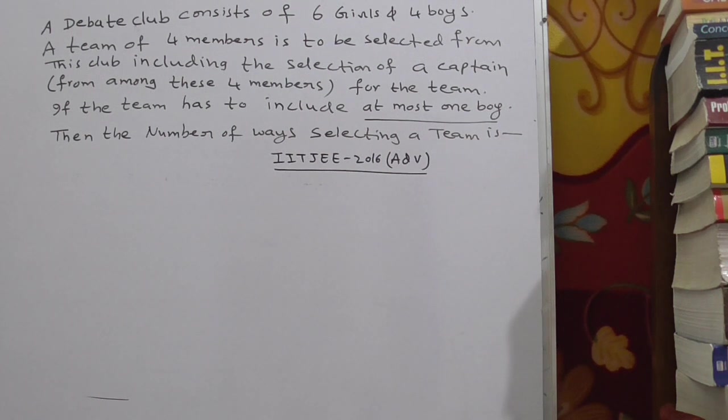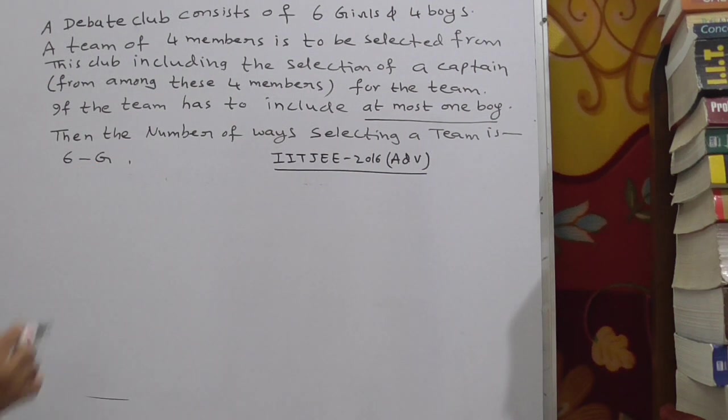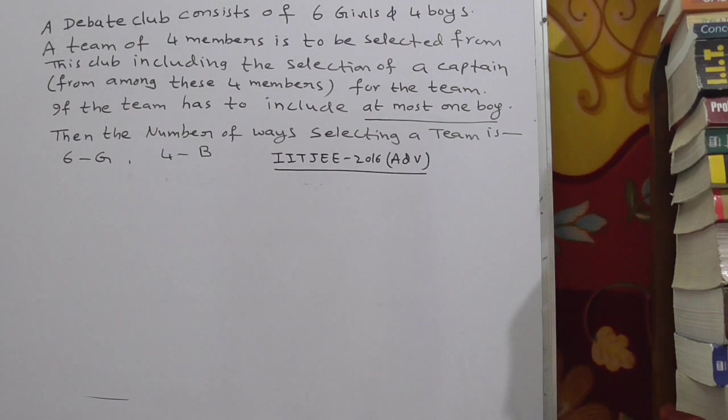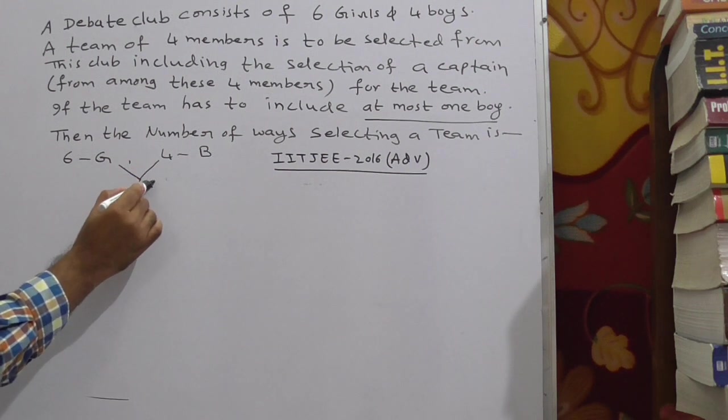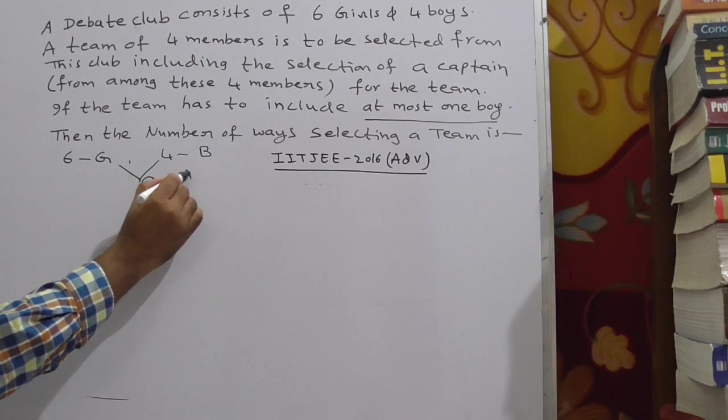Observe the given data carefully. So here, 6 girls are there and 4 boys are there. You have to select a committee of 4 members. You have to select a committee of 4 members and at most 1 boy is the condition. The team has to include at most 1 boy.